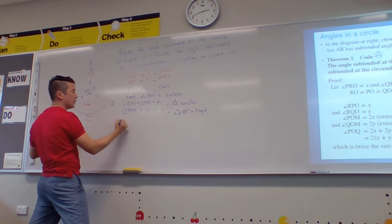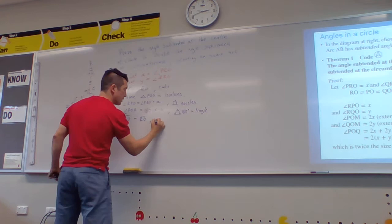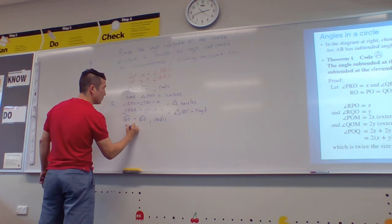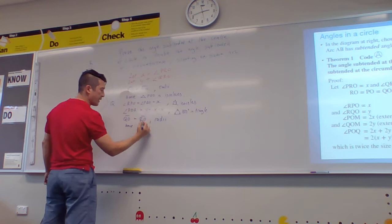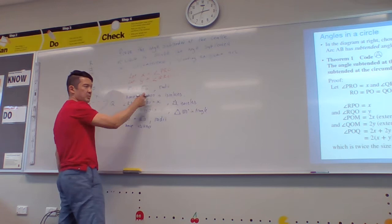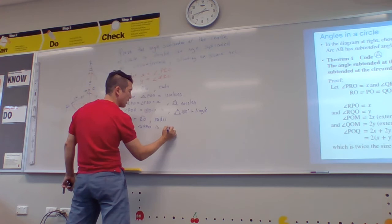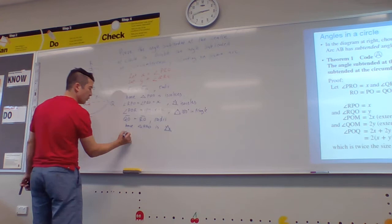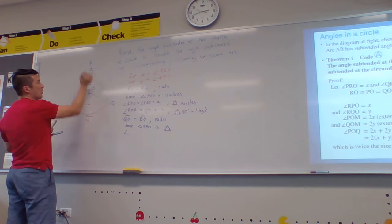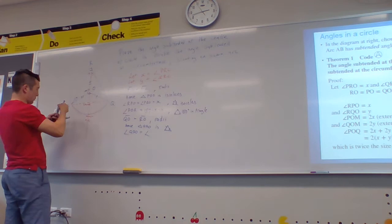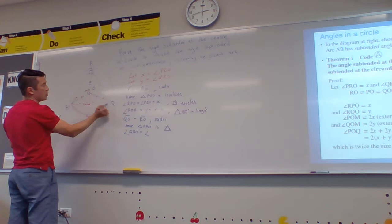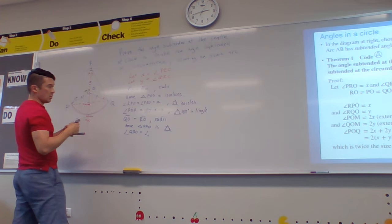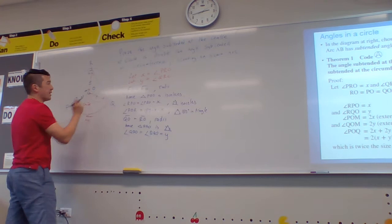So I'm going to say QO is the same as RO. Same reason, they're both radiuses. And hence, triangle QRO, and do you see why now I'm doing those letters in the same order? I'm kind of copying and pasting it out, but I'm just changing P with Q. Is isosceles. I'll draw an isosceles triangle. Therefore, this angle QRO is the same as the angle here, RQO, and these are both equal to Y. I'll chuck that Y in.